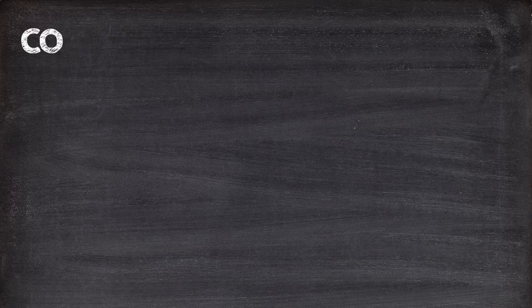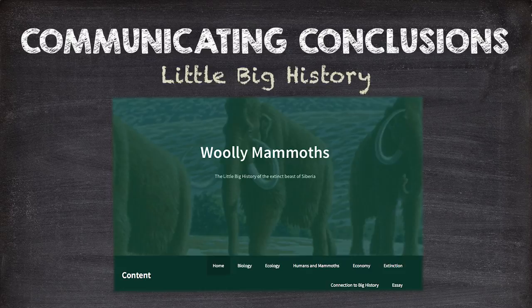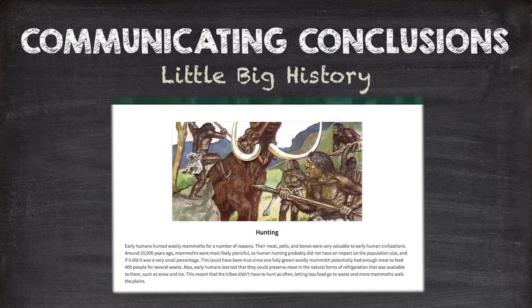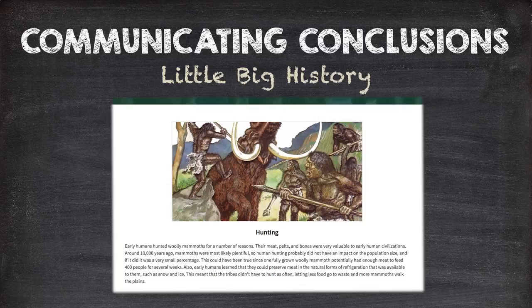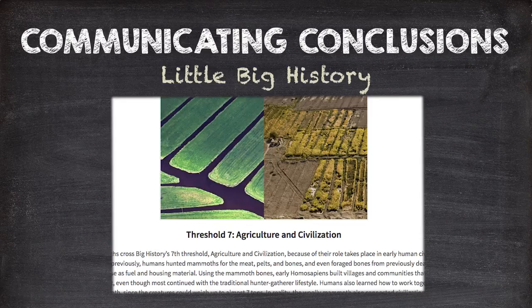One of the most significant projects in the course is called Little Big History — an end-of-course assessment that invites students to choose an object or idea they care about and tell the history of that object through at least three thresholds. One threshold has to be pre-human, and they have to include the perspective of at least three disciplines. Several schools have used this project by holding a Little Big History Night, a kind of science fair where kids get to present their work.